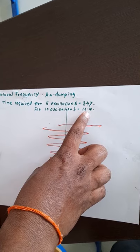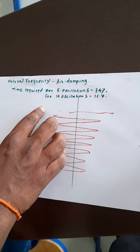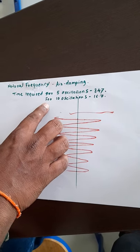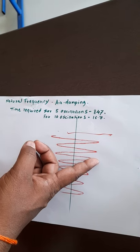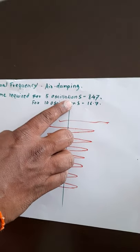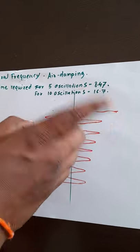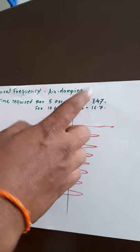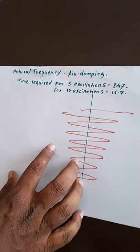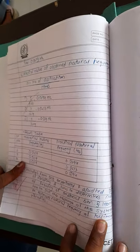And for 10 oscillations we got 16.7 seconds time. When we see from this graph, for 10 oscillations the time required is almost double that of 5 oscillations, that is 8.47 to 16.7 seconds for the amplitude response.